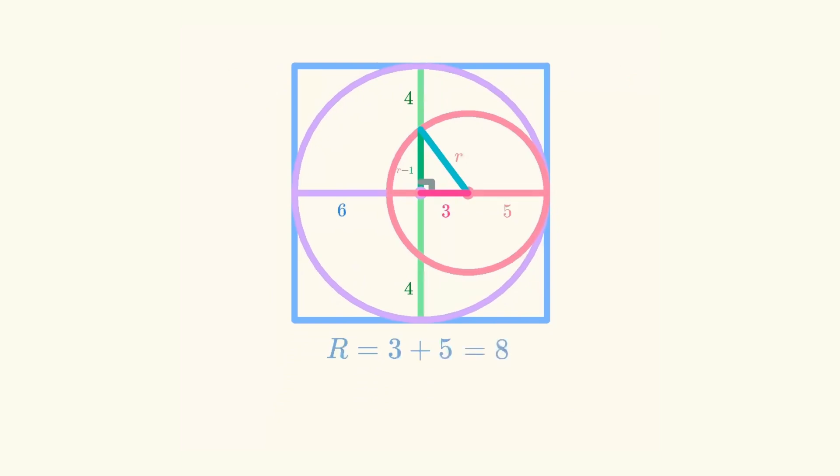3 plus 5, or just 8, equals the length of the large radius. It's also half the side length of the square. So we can double 8 to find the side length of the square is 16. Finally, we'll square the side length to find that the area of the square is 256.